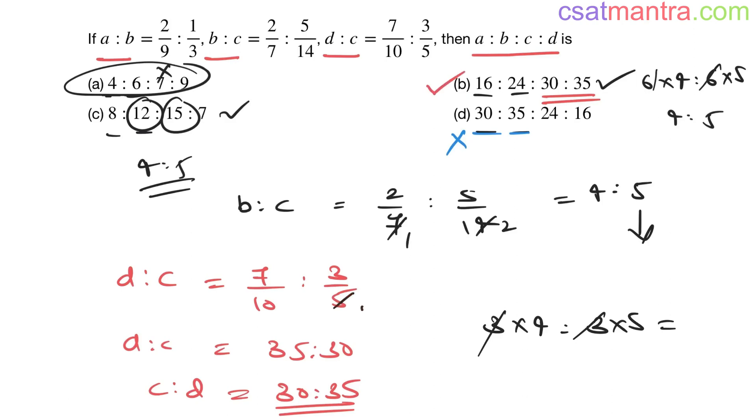If you want to cancel, it's going to be 7 is to 6. Since d is to c is 7 is to 6, then c is to d would be 6 is to 7.